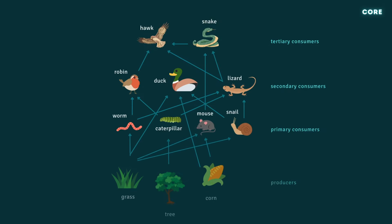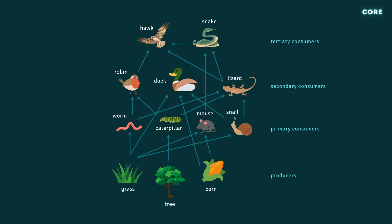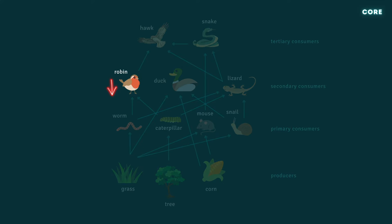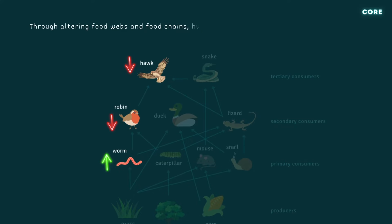As we learned in topic 19.2 on food chains and food webs, a reduction in the population of one species will have knock-on effects elsewhere. Organisms that use the species as a food source will decline in number, and populations of prey species will grow. Therefore, any form of habitat destruction by humans that leads to the eradication of even a single species may have a far greater impact on the wider ecosystem.